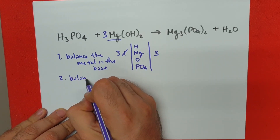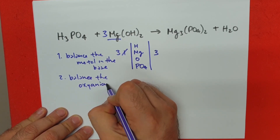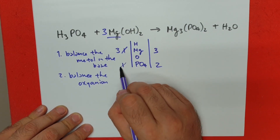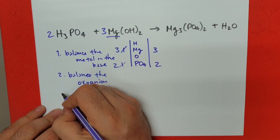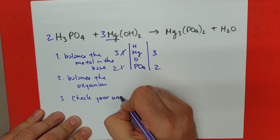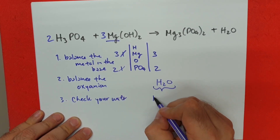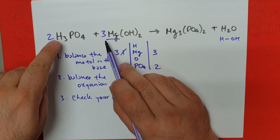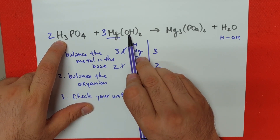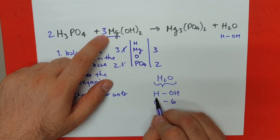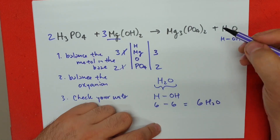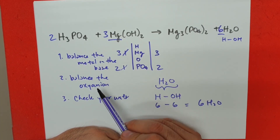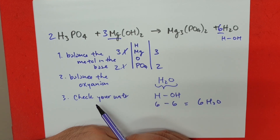The second trick is to balance the oxyanion — in this case, phosphate. We have one phosphate on one side and two phosphates on the other. I add a number two, and this becomes two. The last step is to check your water. Remember, water is H2O but can also be written as HOH. We have one HOH, but let's count: how many H's do we have total? Two times three is six. And how many OH's? Two from the formula times three from the coefficient — we have six of them. So six HOH equals six H2O. Once we add that six, our reaction is effectively balanced. Whenever you encounter an acid with a base: balance the metal first, balance the oxyanion from the acid, then check your water at the very end.